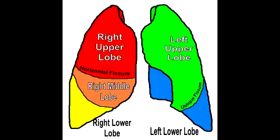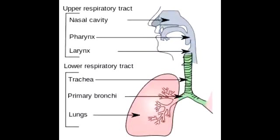What part of the lung do foreign bodies commonly lodge in and why? Foreign bodies commonly lodge in the right lung. The reason being the right main stem bronchus is wider and more vertical. That means just because of gravity, the foreign body will go straight down into the wider and straighter right bronchus.